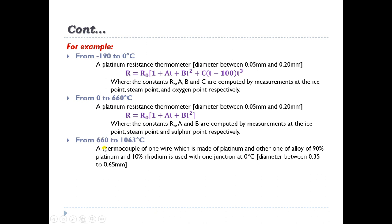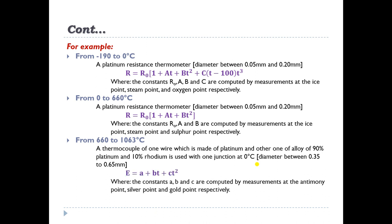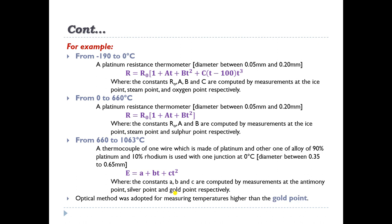From 660°C to 1063°C, a thermocouple of one wire made of platinum and another made of an alloy of 90% platinum and 10% rhodium is used, with one junction at 0°C and wire diameter ranging between 0.35 mm and 0.65 mm. The polynomial equation used is E = A + BT + CT², where A, B, and C are constants computed from measurements at the antimony point, silver point, and gold point respectively.